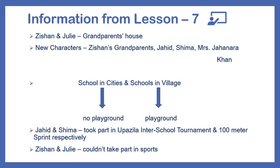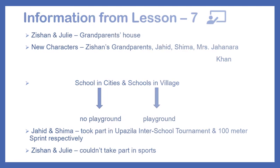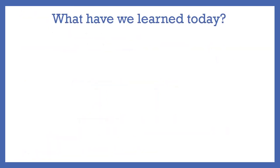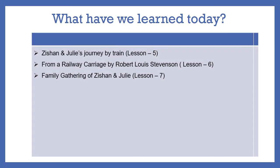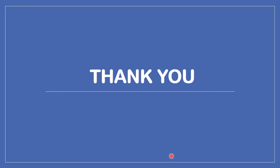With this we have completed Lessons 5, 6, and 7. Today we learned about Jishan and Julie's train journey in Lesson 5, read the beautiful poem 'From a Railway Carriage' by Robert Louis Stevenson in Lesson 6, and got the rest of the story with the family gathering in Lesson 7. Thank you all for being with me. See you in the next class — till then, stay safe and stay well.